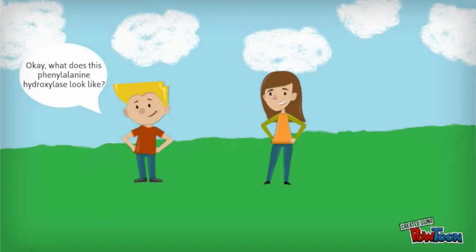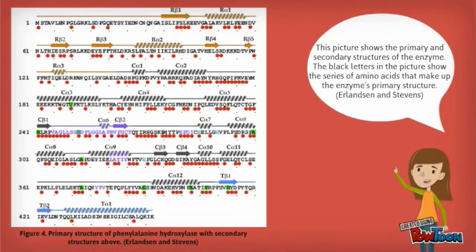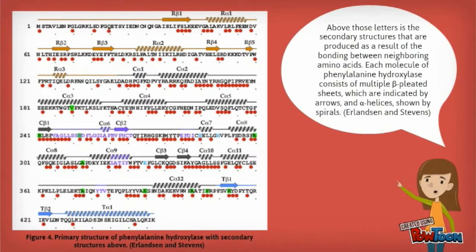Okay, what does this phenylalanine hydroxylase look like? We can actually look at the structure of phenylalanine hydroxylase in four different ways. This picture shows the primary and secondary structures of the enzyme. The black letters in the picture show the series of amino acids that make up the enzyme's primary structure. Above those letters is the secondary structures that are produced as a result of the bonding between neighboring amino acids.